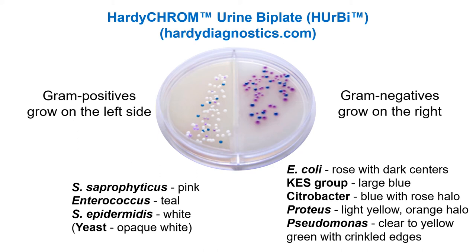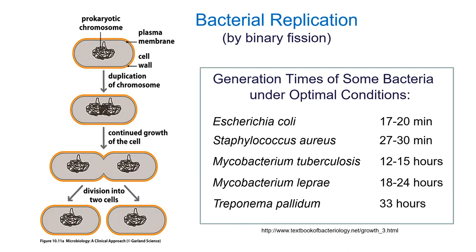If a bacterium has a certain enzyme present, it can break down an included precursor that will change color. When growing microbes in the lab to study them or to make copies of plasmids, we want them as happy as possible — the best food, ideal temperature. Under ideal conditions bacteria can grow remarkably quickly: E. coli can reproduce every 20 minutes, Staphylococcus aureus every 30 minutes. Mycobacteria reproduce much more slowly because they have a complex cell wall that takes longer to build.